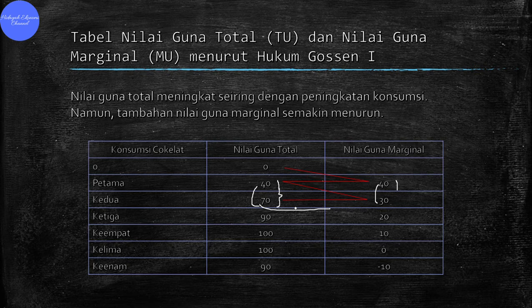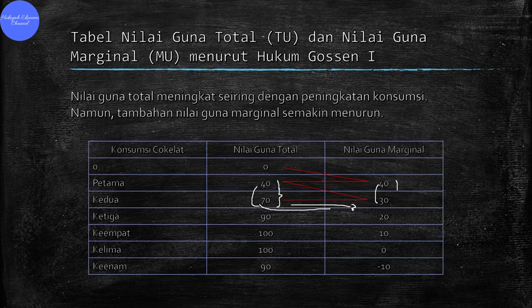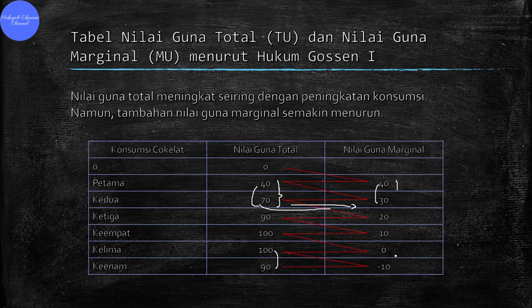Bahkan, ketika kita memakan batang coklat ke-6, kamu tidak mampu menelannya, bahkan menjadi mual karena terus mengkonsumsi. Nilai guna total coklat menjadi menurun dari awalnya 100 menjadi 90. Sedangkan nilai guna marginal atau tambahan kepuasannya menjadi negatif, awalnya positif menjadi negatif. Batang coklat ke-6 sudah tidak selera lagi. Jadi, terlihat bahwa nilai guna marginal atau tambahan kepuasan dalam memakan coklat tersebut semakin lama semakin menurun.